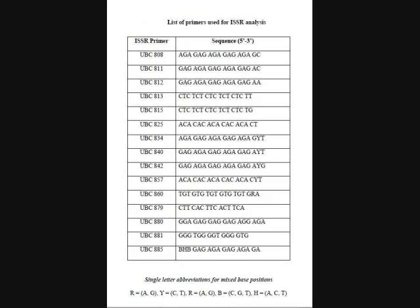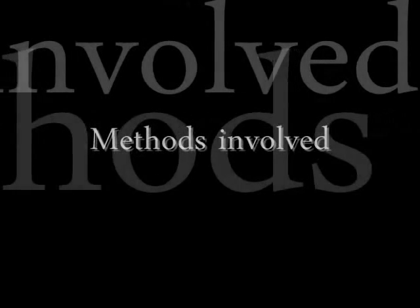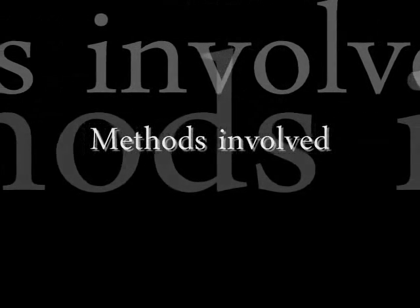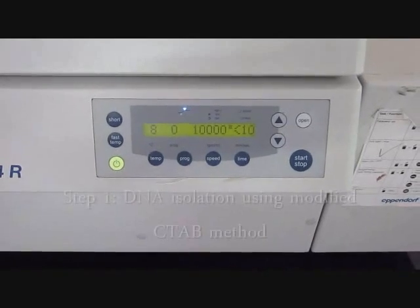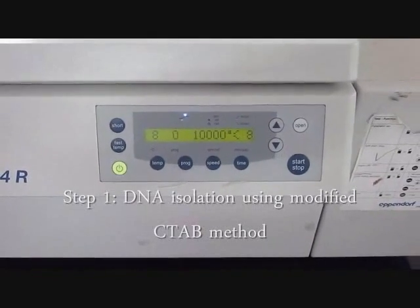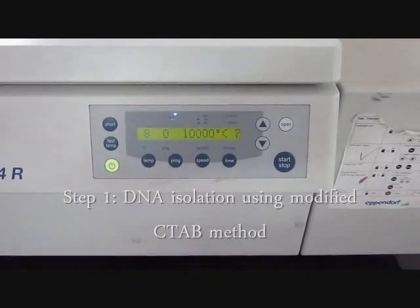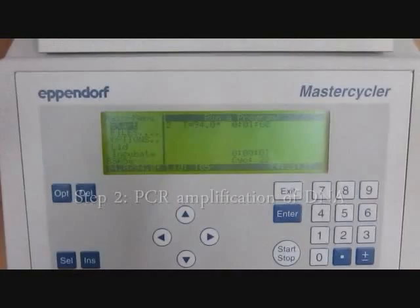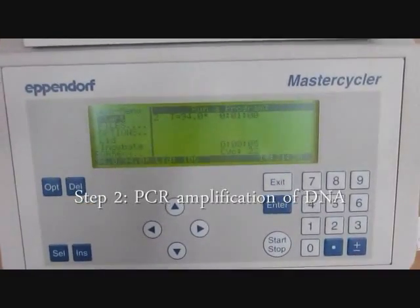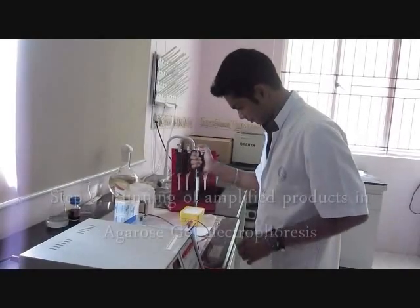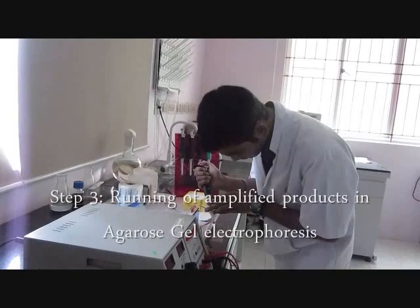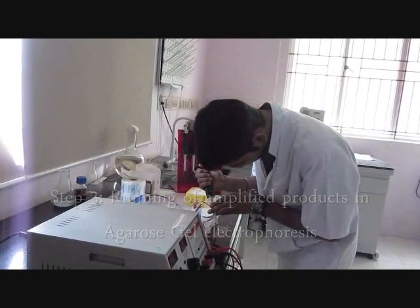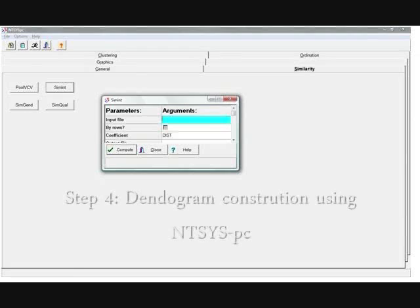These are the list of primers used for this ISSR analysis. The methods involved are: DNA isolation using the modified CTAB method, PCR amplification of the DNA, running of the amplified products in agarose gel electrophoresis, and dendrogram construction using NTSYS software.